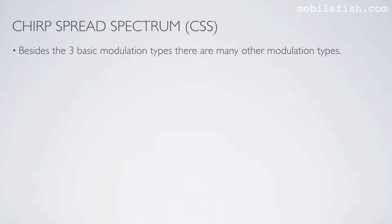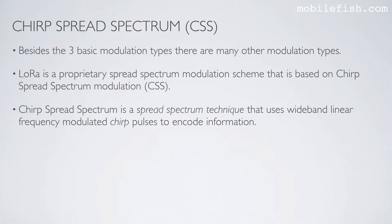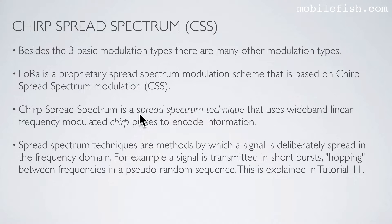Besides the three basic modulation types there are many other modulation types. LoRa is a proprietary spread spectrum modulation scheme that is based on chirp spread spectrum modulation. Chirp spread spectrum is a spread spectrum technique that uses wide band linear frequency modulated chirp pulses to encode information. Spread spectrum techniques are methods by which a signal is deliberately spread in the frequency domain — for example, a signal is transmitted in short bursts hopping between frequencies in a pseudo-random sequence.